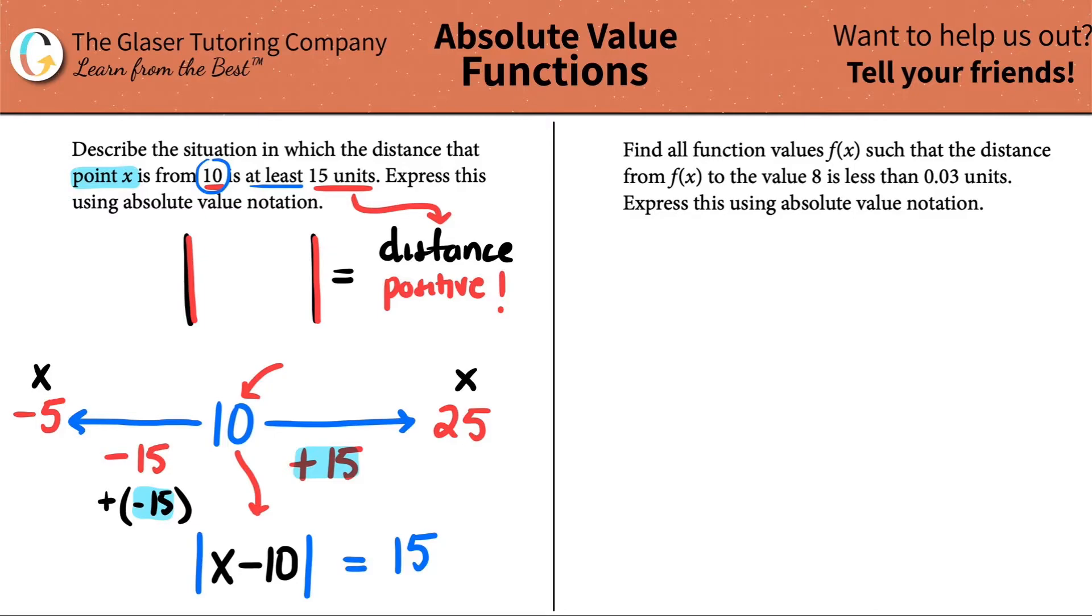Now, we have to be careful here. The key words here is that it said that describe the situation in which the distance that point x is from 10 is at least 15 units. So at least technically means that it could be more, right? Can't be less, though. It has to be at least 15. So when we come down here, it's not going to equal 15. It has to be at least 15. So I need to change this. I need to give either greater than or less than signs.